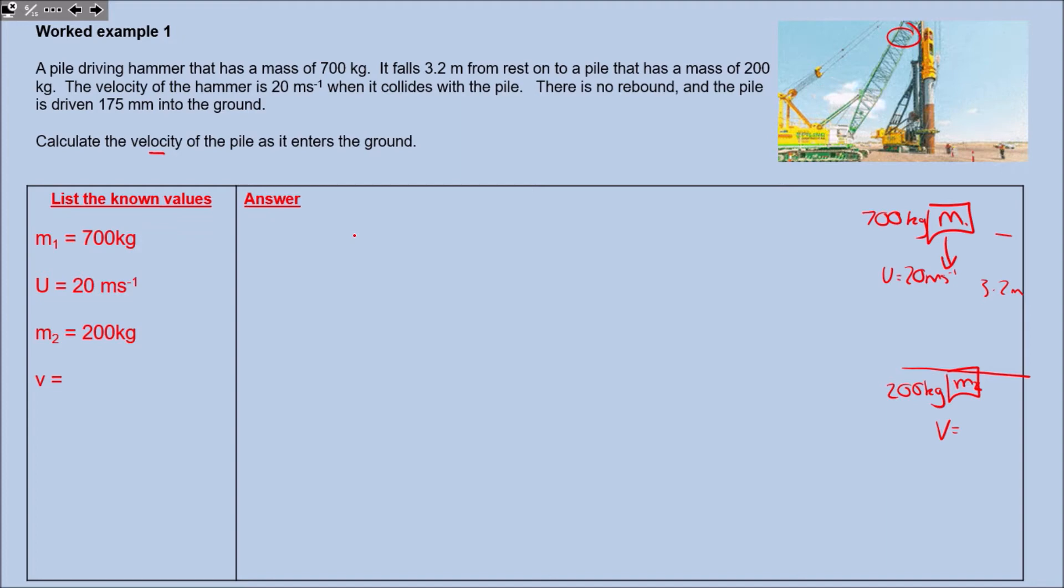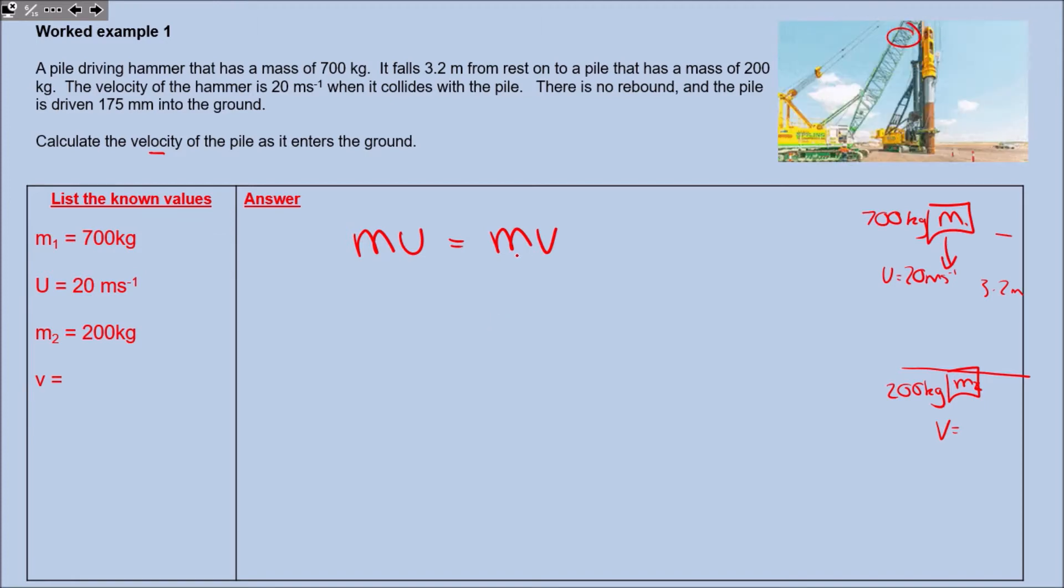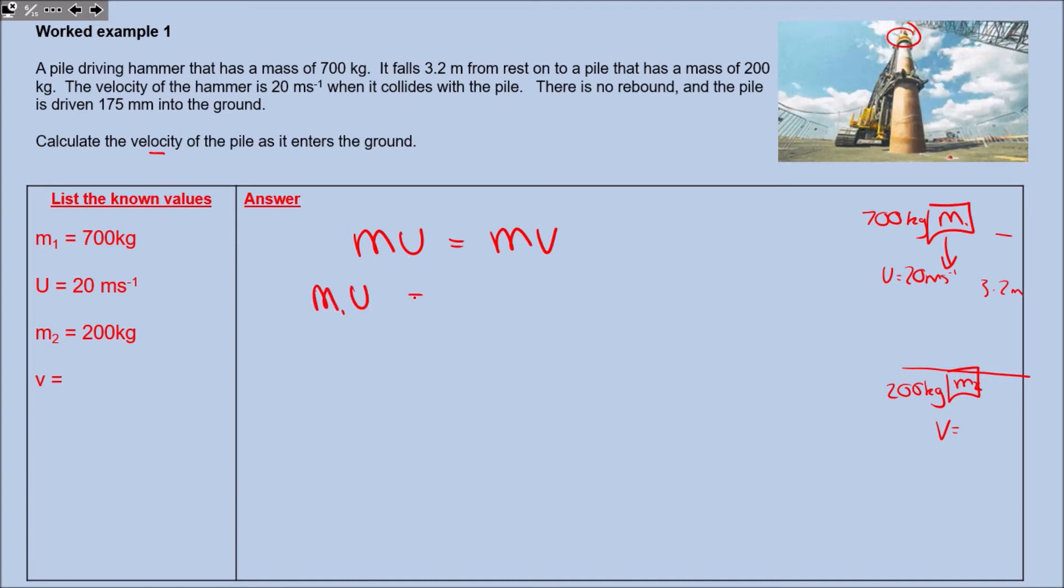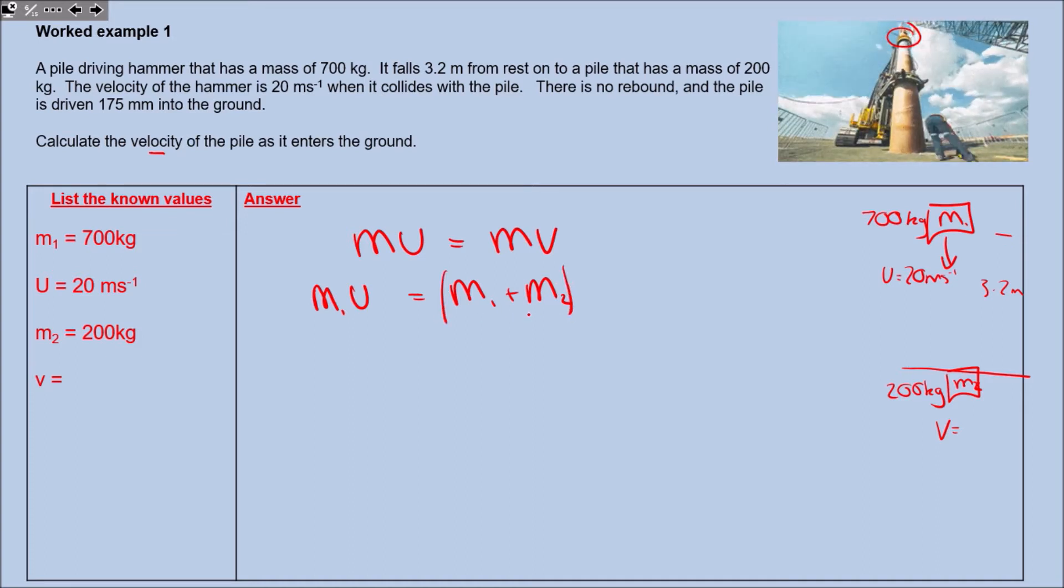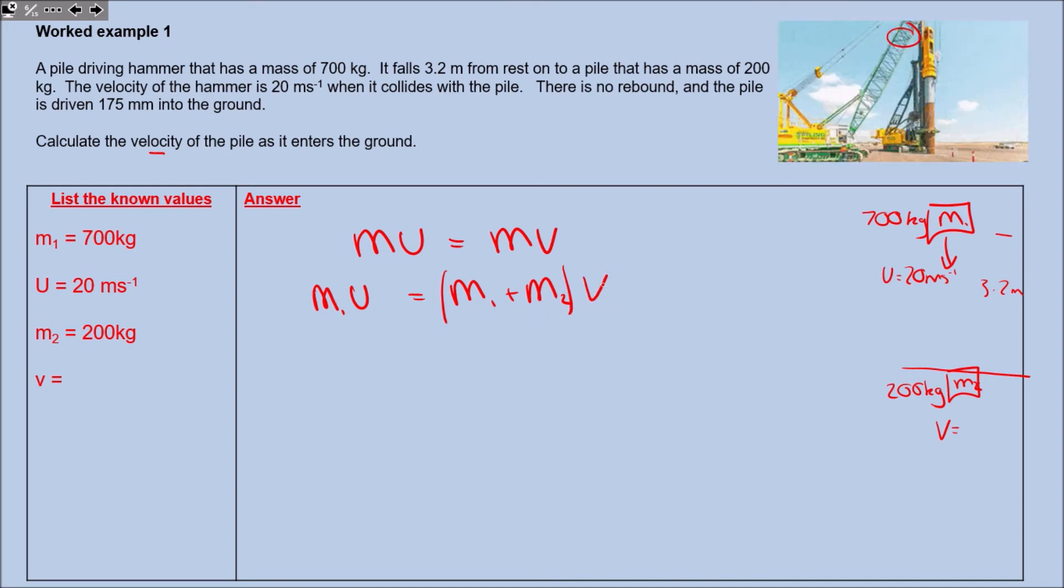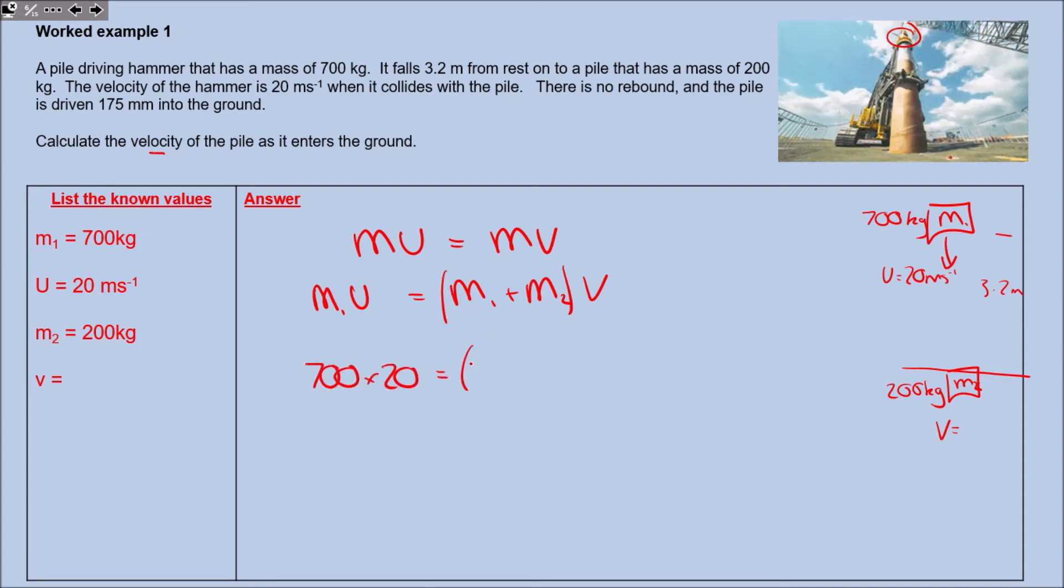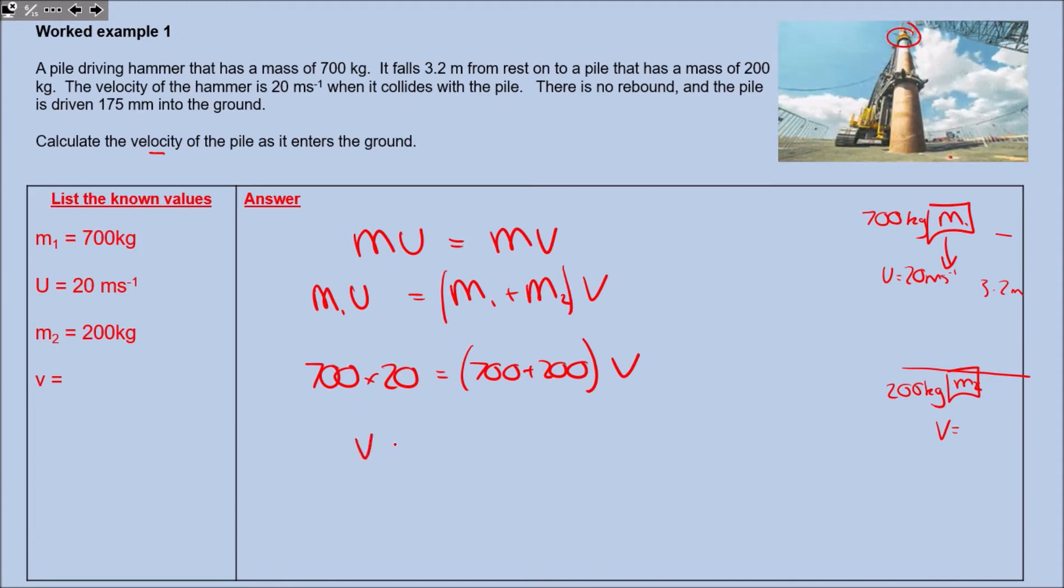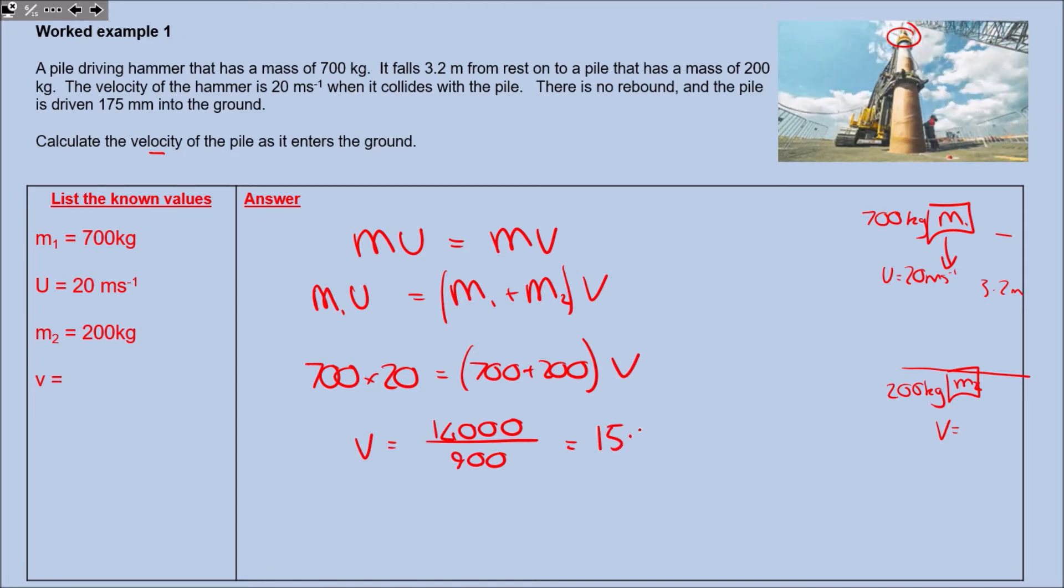Let's use our values and conservation of momentum to find what v is. The formula: m u equals m v. Now we need to expand this because we've got two masses. M1 times u equals M1 plus M2 (because when that mass hits that one they both become part of the system) times v. Let's plug some numbers in: 700 times 20 equals 700 plus 200 times v. We'll do the calculation: v equals 14,000 divided by 900, which gives us 15.5 meters per second.